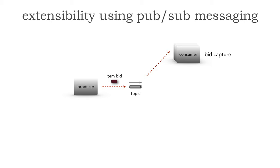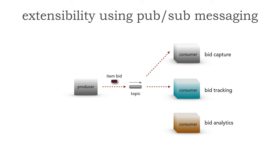This is the same topology as before, but watch this. Now when we start extending our functionality to say we'd like to start tracking those bids, there are no changes that need to be made in our architecture or applications at all. Because the bid tracker, as a durable subscriber, simply needs to subscribe to that topic — the bid data is already there.